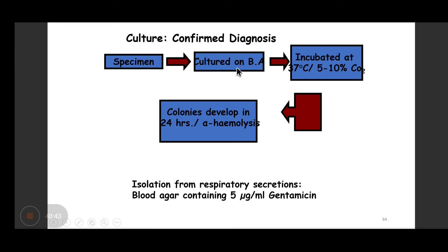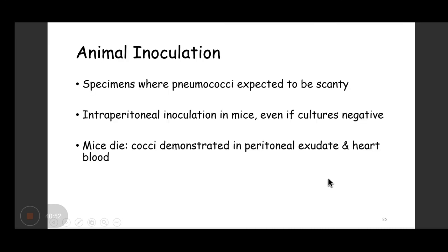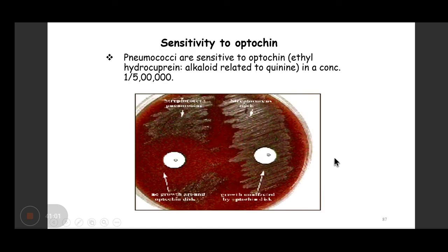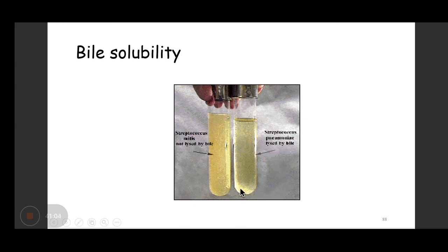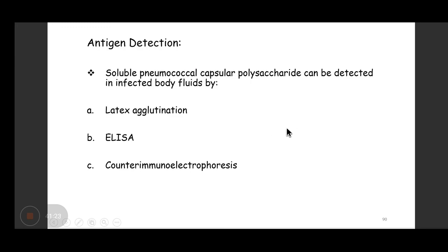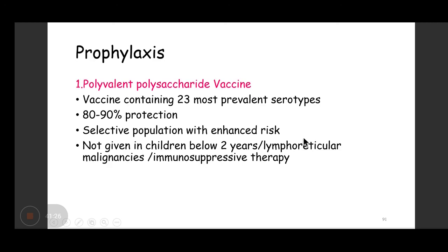Laboratory procedure: take sample, culture on blood agar, perform microscopy, incubate with 5–10% CO2; alpha-hemolytic colonies appear in 24 hours. Animal inoculation is not done routinely. For identification: optochin sensitivity test and bile solubility test — adding bile to culture causes the culture to become clear due to cell lysis. Antigen detection is done by ELISA, latex agglutination, or counter-immunoelectrophoresis.